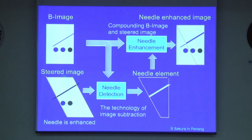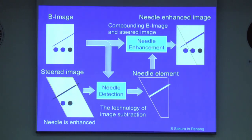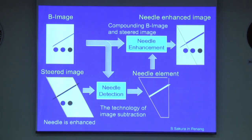On the other hand, with a steered beam, the beam can be vertical to the needle, so the reflected echo directly comes back to the transducer to enhance the needle image. After that, machines usually detect the needle using a technology called image subtraction. Finally, they compound these images to create an image showing both the needle and tissues clearly.